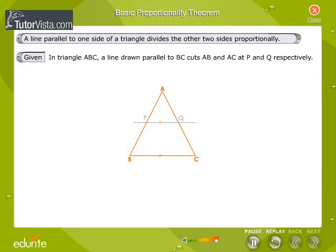Triangle ABC has a line drawn parallel to BC, which cuts AB and AC at points P and Q respectively. We are required to prove that AP by PB is equal to AQ by QC.